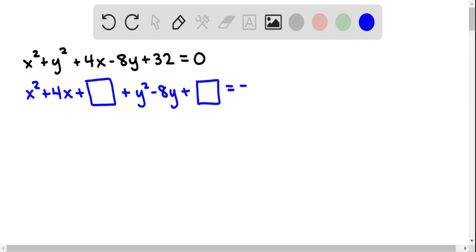And then I'm going to subtract 32 from both sides, so we have equals negative 32 plus whatever numbers we add to the left side we're going to add to the right side.